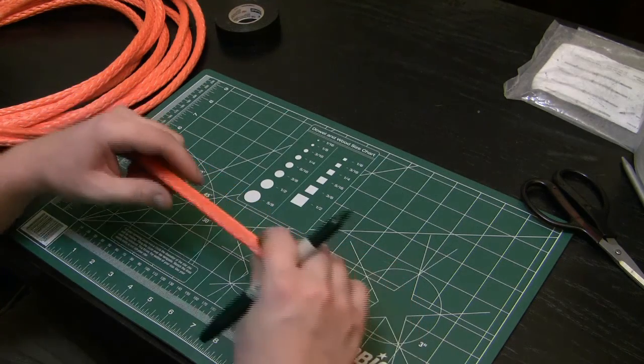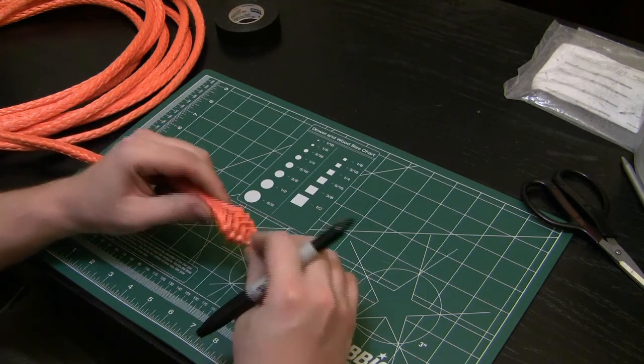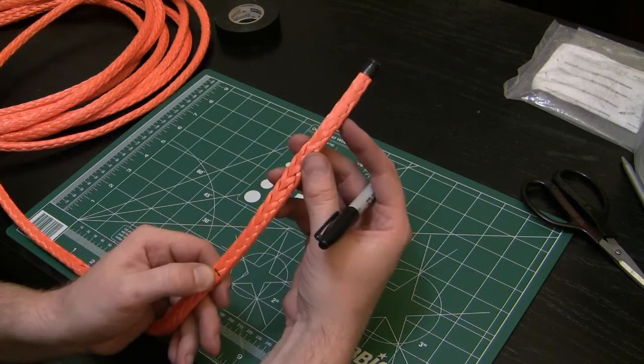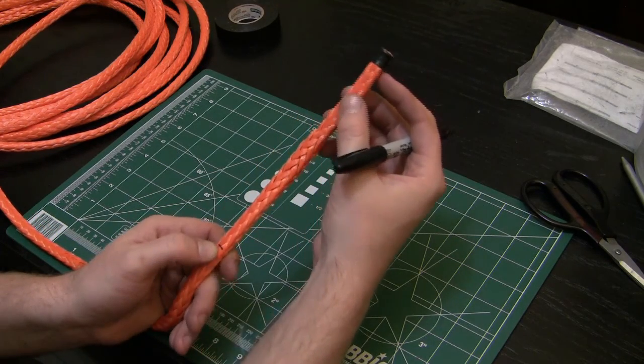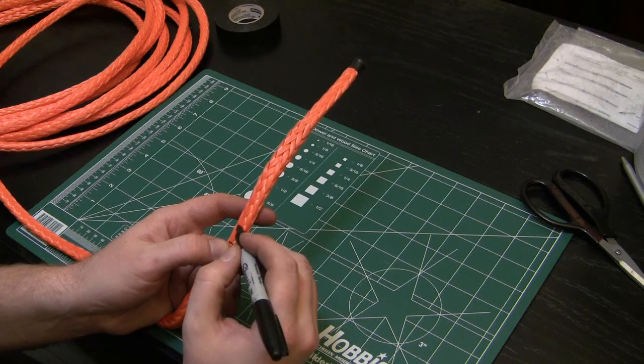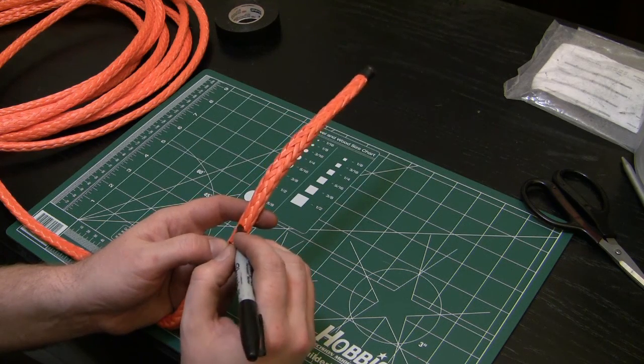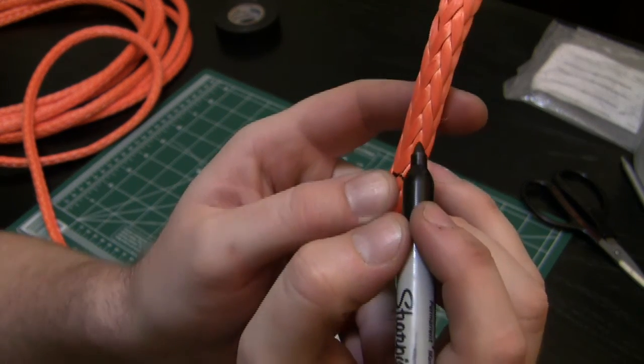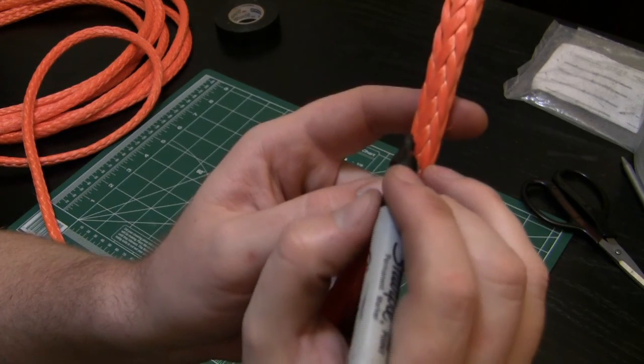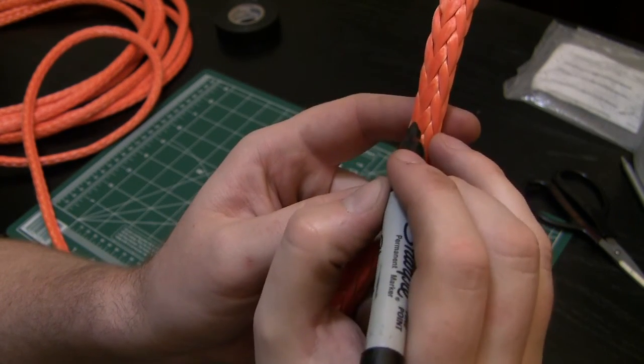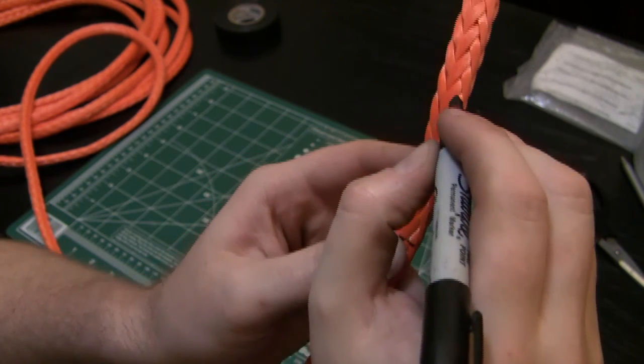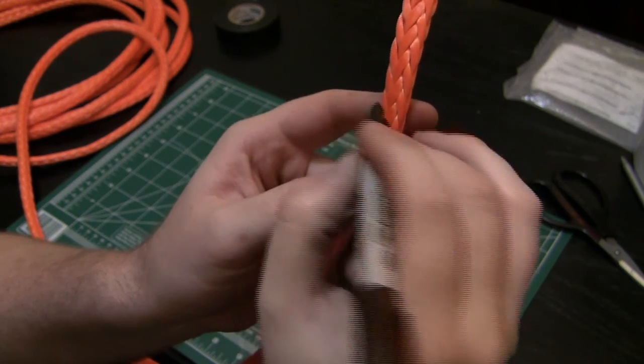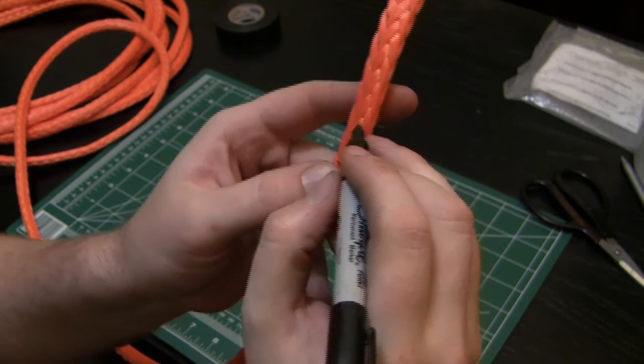This is 12-strand rope, so to get a 50% taper we need to remove six strands. From mark one looking towards the end, we're going to mark six of the strands. They land in a V pattern. We're going to mark a V, then skip a V, then mark a V, then skip a V. Three Vs on each side will give you six strands for your 50% reduction.